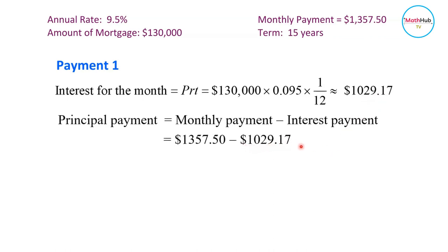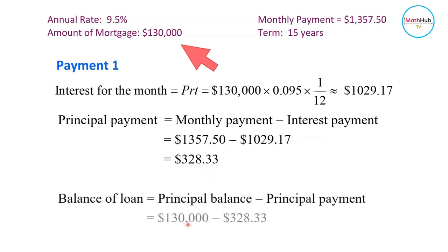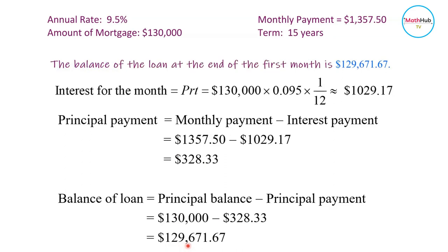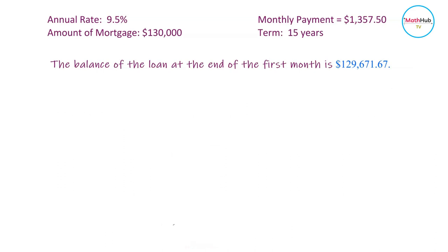The amount $1,029.17 is the interest payment. The difference between the monthly payment and the interest payment is the amount that goes to the principal. The principal payment is computed as monthly payment minus interest payment, which equals $328.33. To get the balance of the loan, take the principal balance ($130,000) minus $328.33. After one month, the new balance is $129,671.67.